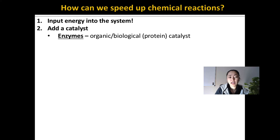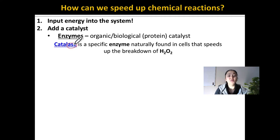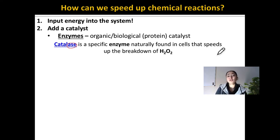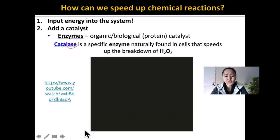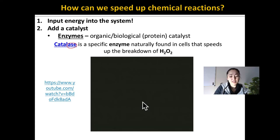One of the enzymes you will be looking at in lab is called catalase. Notice that most enzymes end with the suffix '-ase,' and that's a way to recognize many different enzymes. Catalase is a specific enzyme naturally found in the cells of almost every living organism, and it speeds up the breakdown of hydrogen peroxide within that organism.